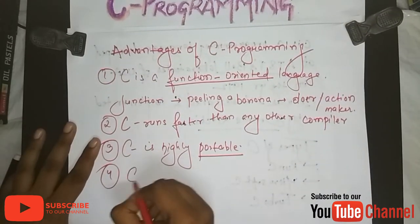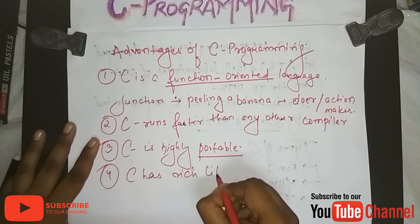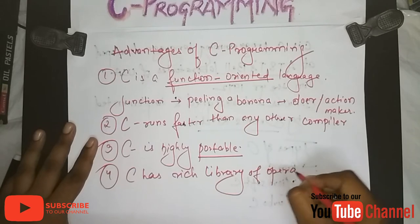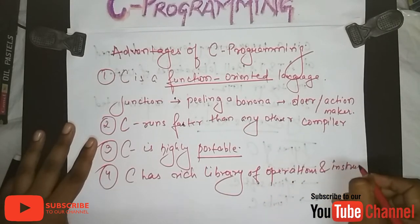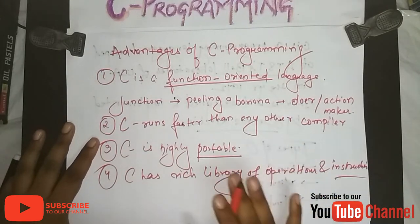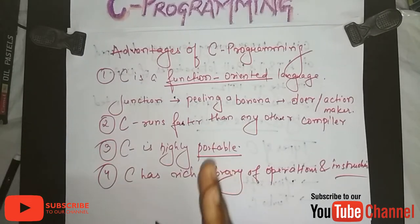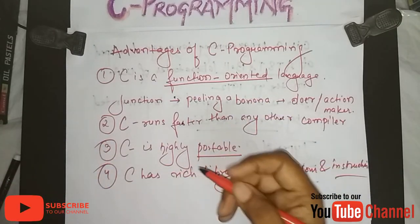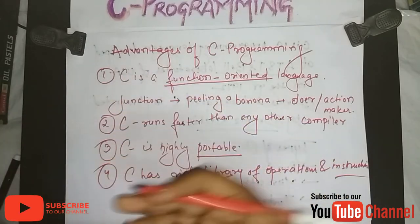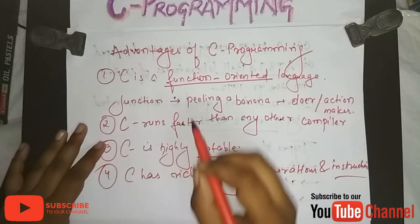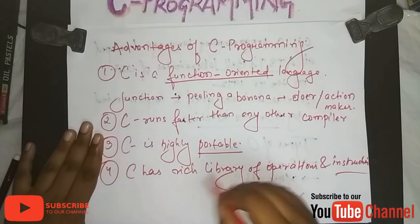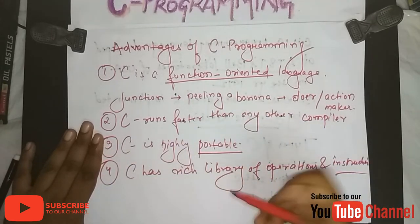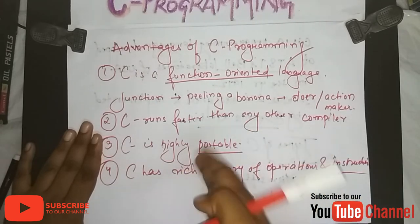The fourth advantage is C has a rich library of operations and instructions. Having a library means, just like in a normal library we keep books that we can easily access, in C the library has many instructions stored. You don't have to look for them outside — just import that function or operation from the library and use it in your program.